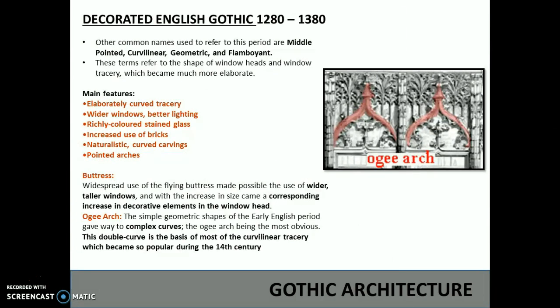The Decorated English Gothic period. Other common names used to refer to this period are middle-pointed, curvilinear, geometric and flamboyant. These terms refer to the shape of window heads and window traceries, which became much more elaborate. The main features are elaborately curved tracery, wider windows and better lighting, richly coloured stained glass, increased use of bricks, and naturalistic curved carvings and pointed arches.